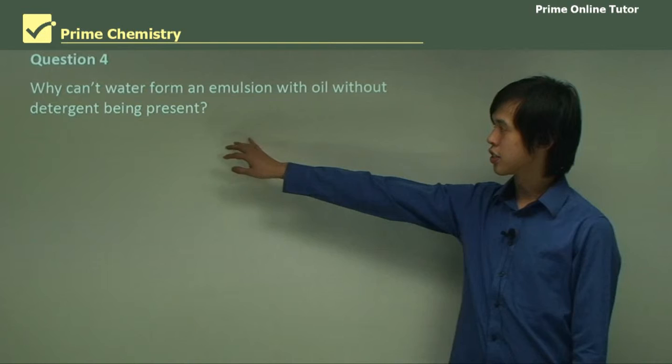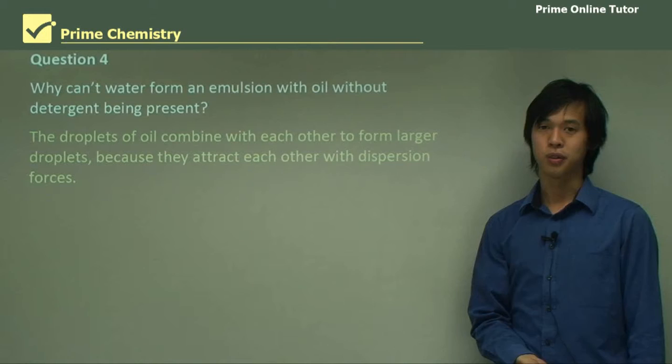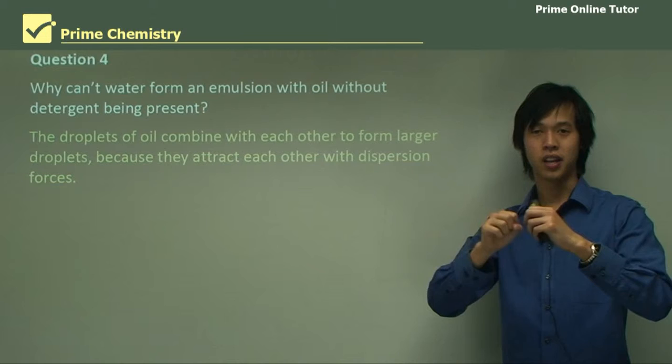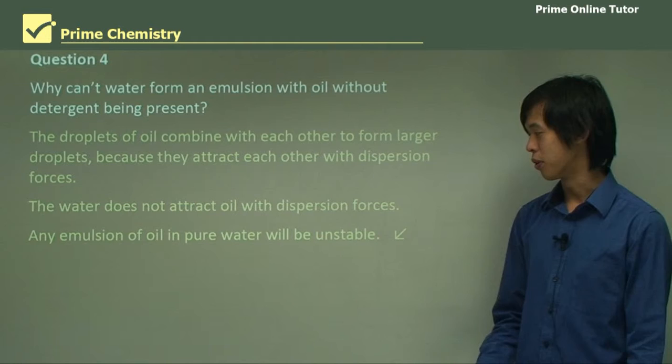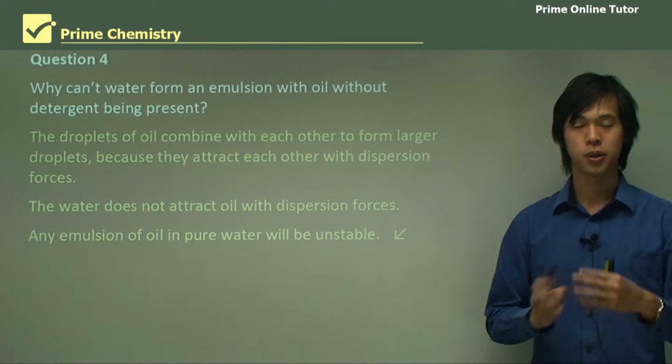Question: why can't water form an emulsion with oil without detergent present? The droplets of oil combine with each other to form larger droplets because they attract each other with dispersion forces. Even if you mixed oil and water very vigorously to get really small droplets, those droplets would start attracting one another and forming bigger droplets. Water does not attract oil with dispersion forces because water is polar, so any emulsion of oil in pure water will be unstable.